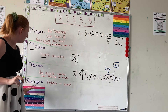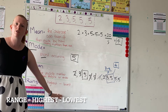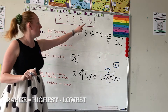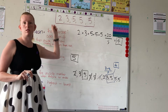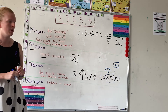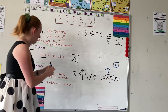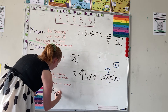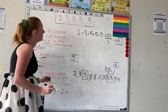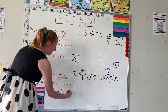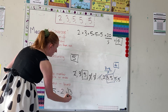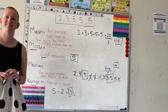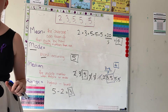And then let's look at the range. The range is pretty simple — it's just the biggest number take away the smallest number. So in this case we've got five minus two, which gives us three.